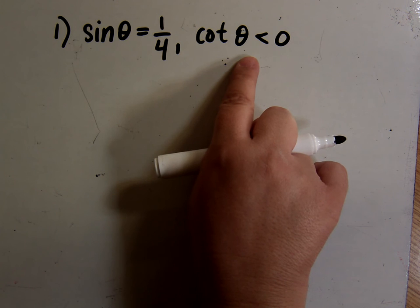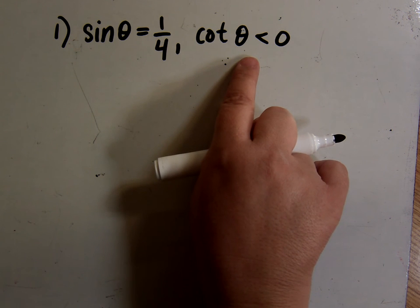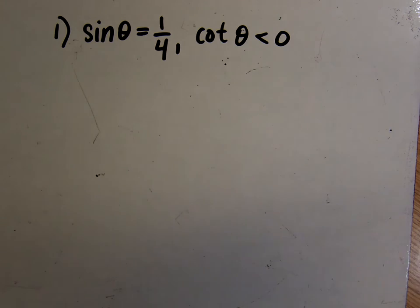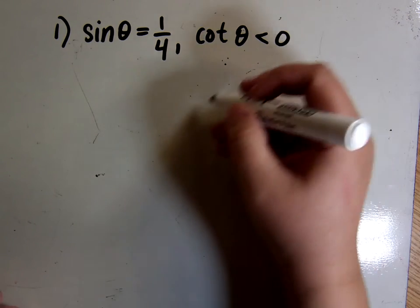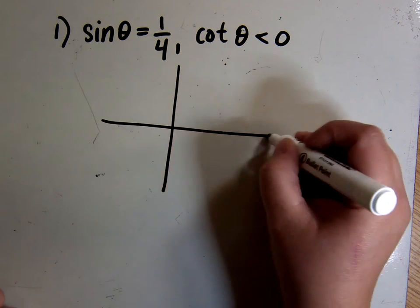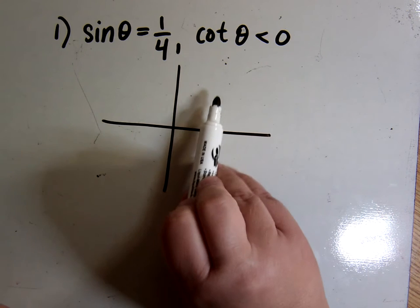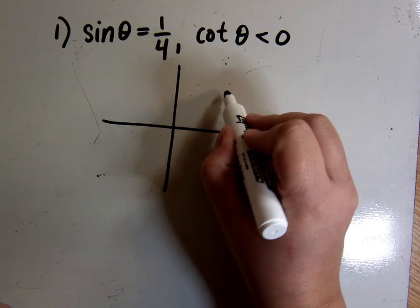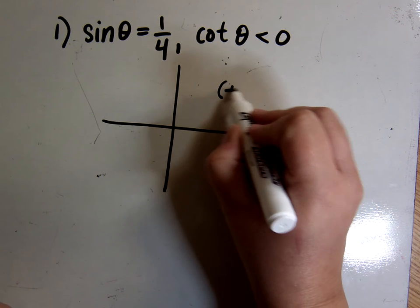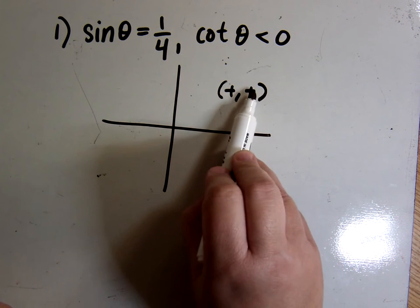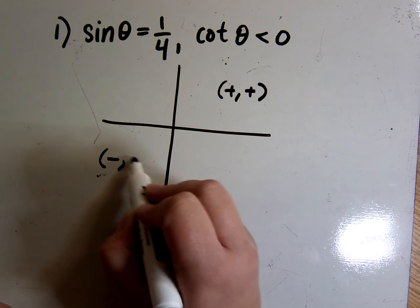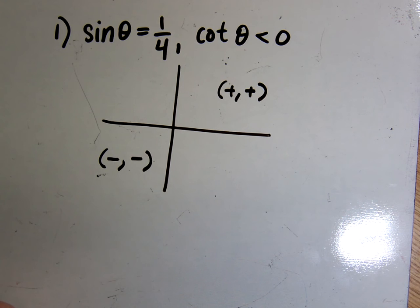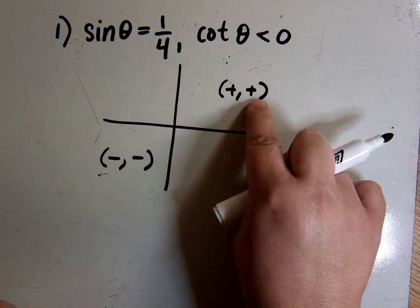Cotangent is the co-function of tangent, so whatever sign the cotangent has is also the sign of the tangent. So my tangent is going to be a negative number. Tangent is positive in quadrant 1 because sine over cosine is positive over positive, and in quadrant 3 because negative over negative is also positive. So the tangent is positive in quadrants 1 and 3.